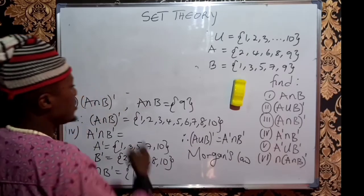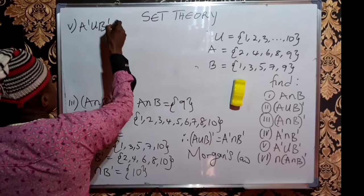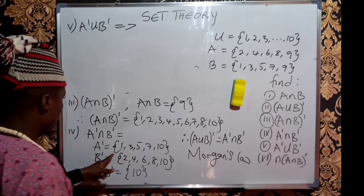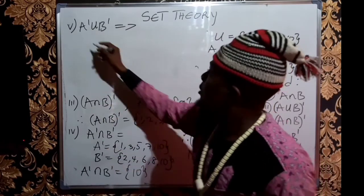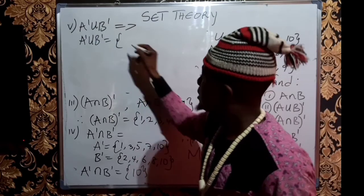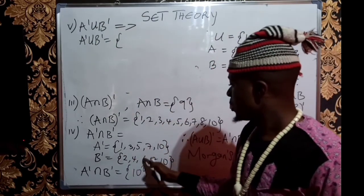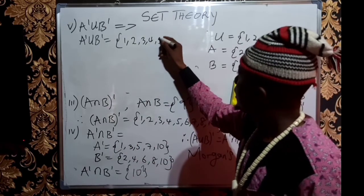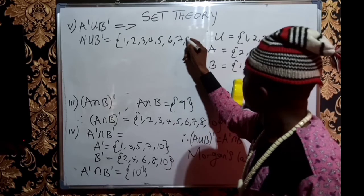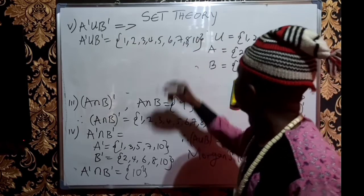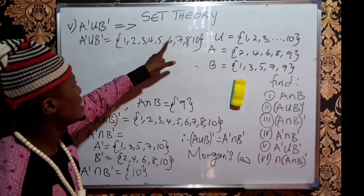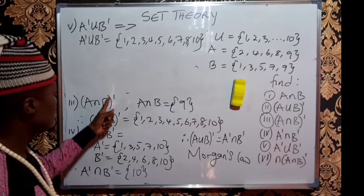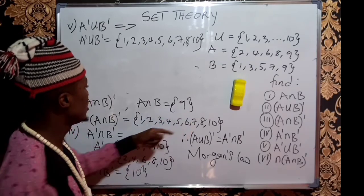Now let's find A' ∪ B'. We already know A' and B'. A' ∪ B' means merging A' and B' together without repeating any element. The result is 1, 2, 3, 4, 5, 6, 7, 8, and 10 — there is no 9 in either complement set.